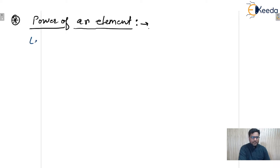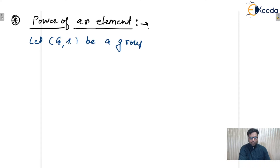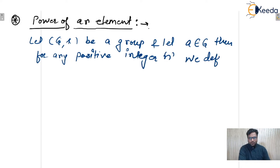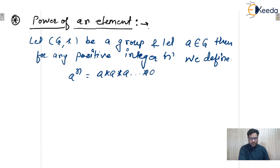Write down the definition first. Let G, star be a group, and let a belong to G. Then for any positive integer n, we define a raised to power n as a star a star a — that is n times.